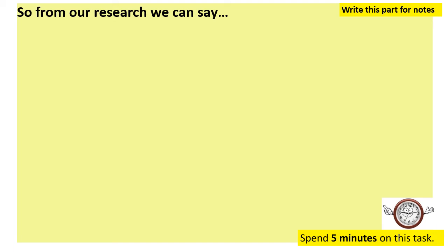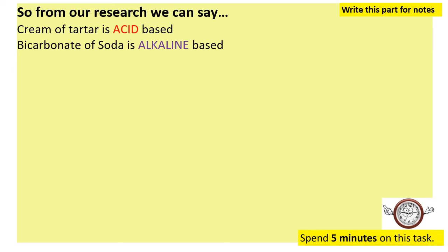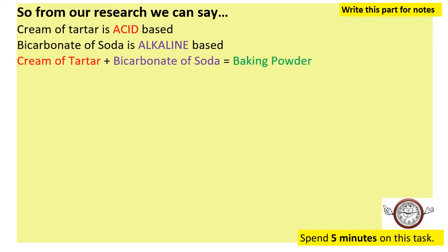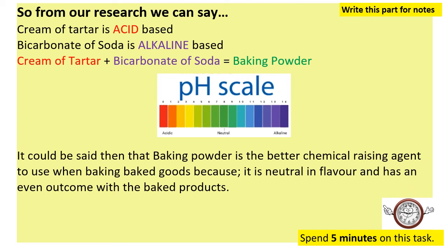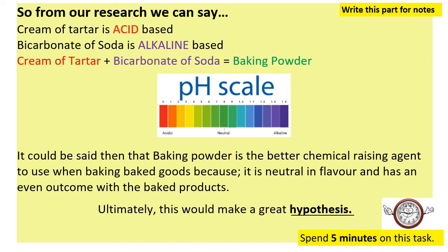To summarize: cream of tartar is acid-based, bicarbonate of soda is alkaline-based, and cream of tartar plus baking soda equals baking powder. When relating this to the pH scale, baking powder is the better chemical raising agent to use when baking because it is neutral — it combines an acid and an alkali to produce a neutral product. This makes a great hypothesis for experimenting within food science. Write this part for your notes and spend five minutes on this task.